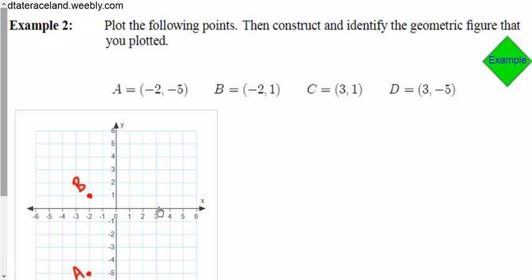C is 3, 1. And D is 3, negative 5. And then you just need to go and connect the points and see what type of shape we've got here. And I think it's pretty clear that it's either going to be a square or a rectangle. In this case, you can tell that the top and bottom is shorter than the sides. And that would just make it a rectangle.